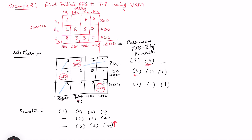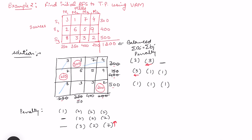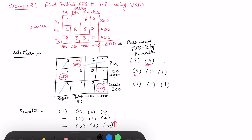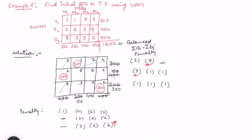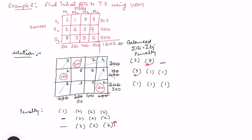The allocation is the minimum of 200 and 500, so 200 goes here. This demand of 200 is now exhausted, and the remaining supply is 300. That column is also exhausted. We keep subtracting the allocated quantities from the remaining supply and demand to avoid calculation mistakes. Then we repeat the process again.